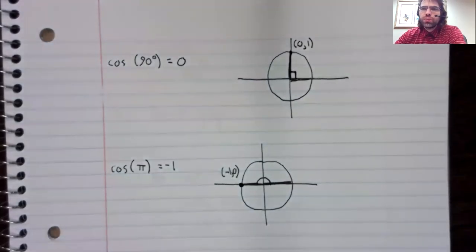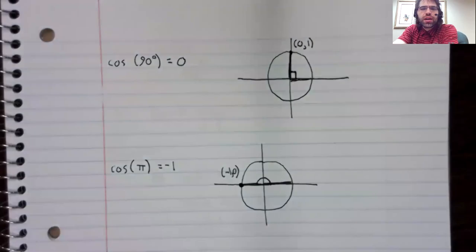So here's the point where the ray intersects to zero. And the cosine is negative one. So whether you're measuring in degrees or measuring in radians doesn't really matter.